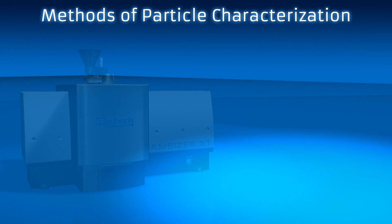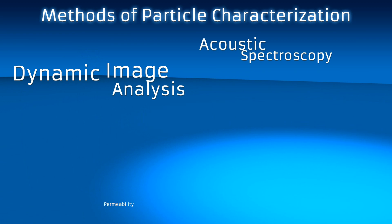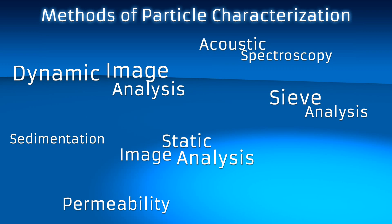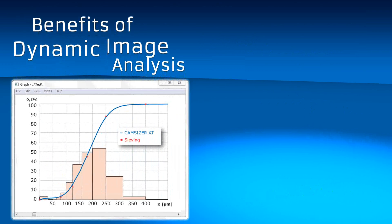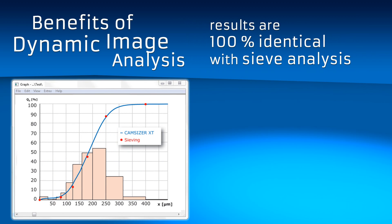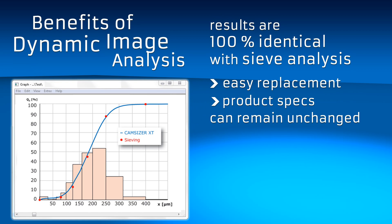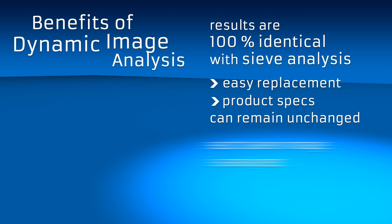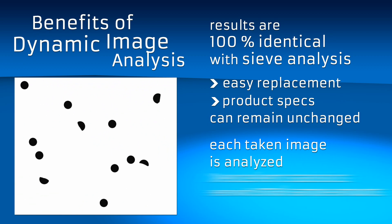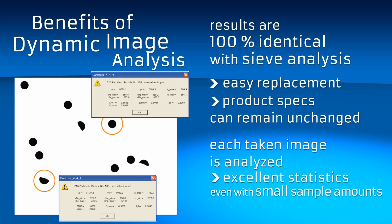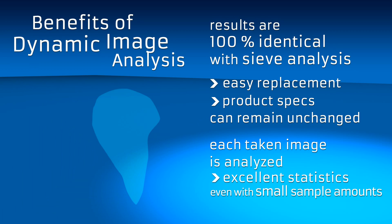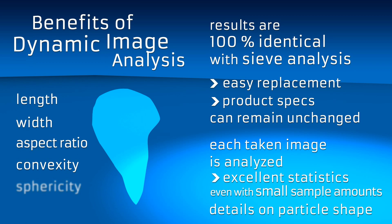Besides dynamic image analysis, the market offers instruments using other analysis methods which provide information on particle characteristics. But what are the benefits of DIA? Results obtained with the CamSizer XT are 100% identical with sieve analysis. Thus, the replacement of the time-consuming and unreliable sieving process with the CamSizer XT is straightforward, and the product specifications can remain unchanged. Due to the fact that each particle in each image is analyzed, excellent statistics are obtained in a very short measurement time. The high detection efficiency ensures reliable results even with small sample amounts. Furthermore, the CamSizer XT provides details on the shape of the particles — information that other analysis methods cannot deliver.